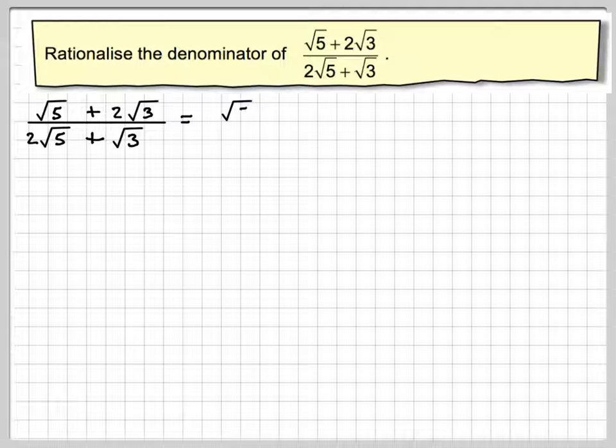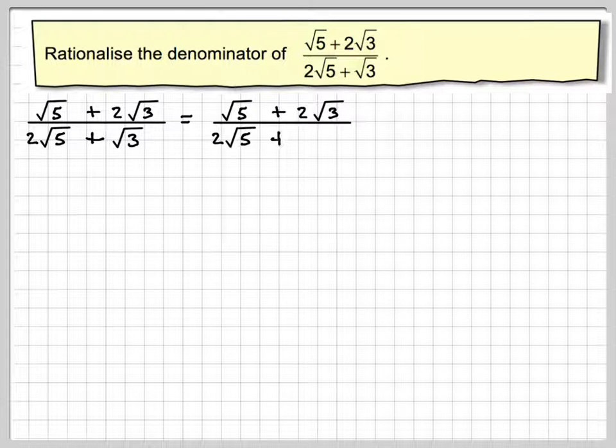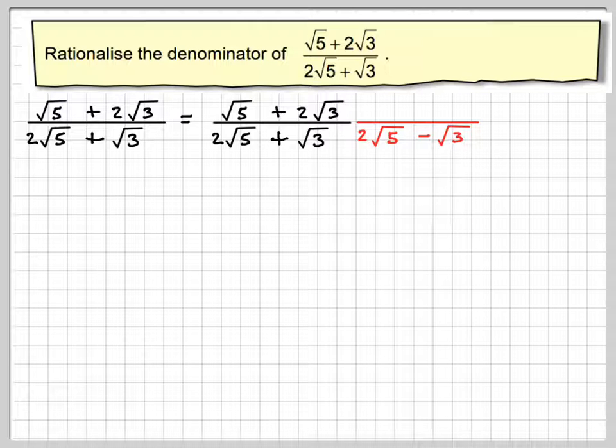Right, this is going to be equal to this. Now what you do is you look at the denominator here. You've got 2 root 5 plus root 3, and therefore you need to write the same thing down again, but change the sign to minus. So it's 2 root 5 minus root 3. Because you've done it to the denominator, you must also do the same thing to the numerator. So we haven't changed the meaning of the fraction.